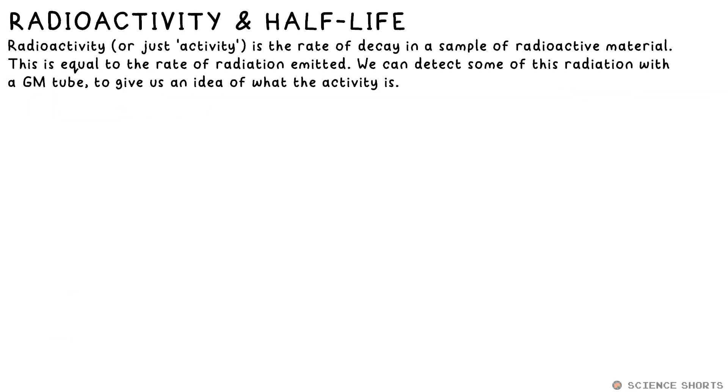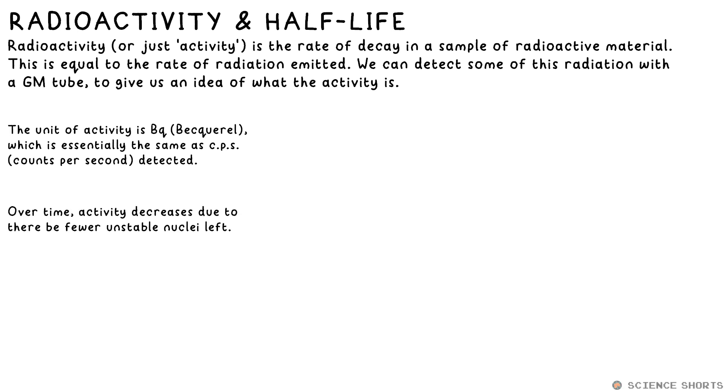Radioactivity is the rate of decay of a source of alpha, beta or gamma radiation. Now you know it's not really decay with gamma, but it's the same idea. This rate can be measured with a GM tube, like we said, and we can calculate it by doing radiation count divided by time in seconds. This gives you the radioactivity, sometimes just called activity, activity in counts per second, which is also called Becquerel, BQ for short. Over time, the number of unstable nuclei in a source decreases as they're decaying into something else. So that means the activity decreases too.